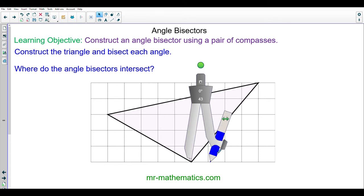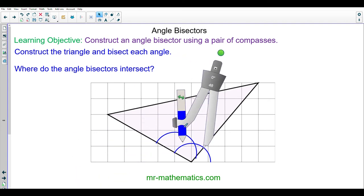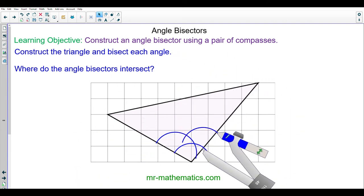Okay, I'm going to bisect this angle by drawing the arc and then another arc. I can draw the line from the angle through the two arcs.